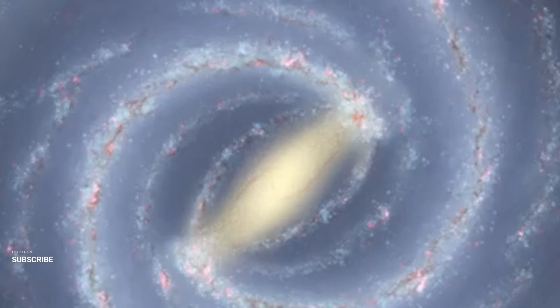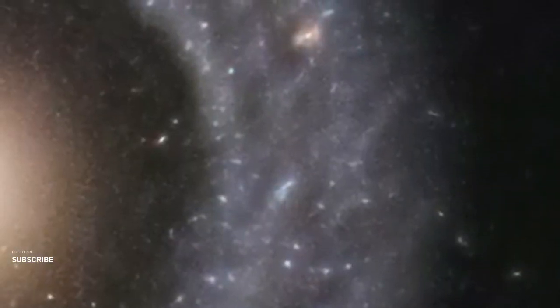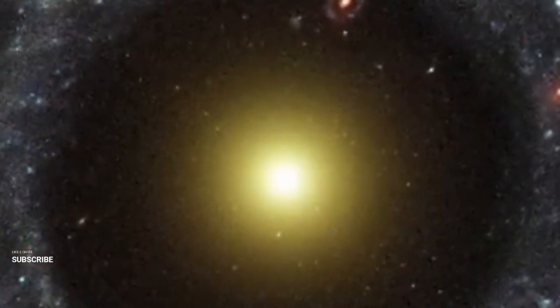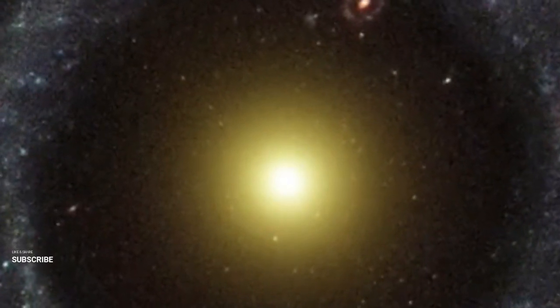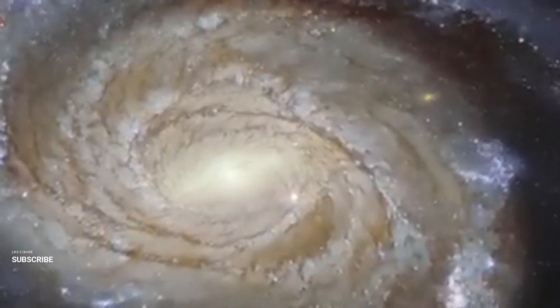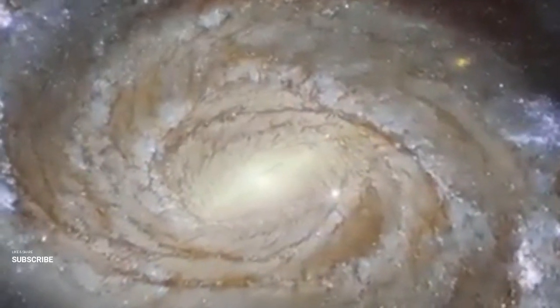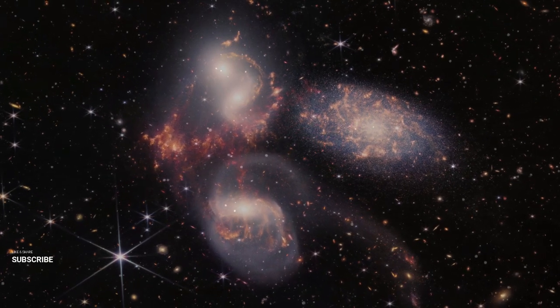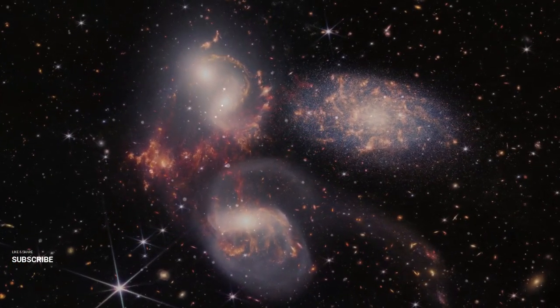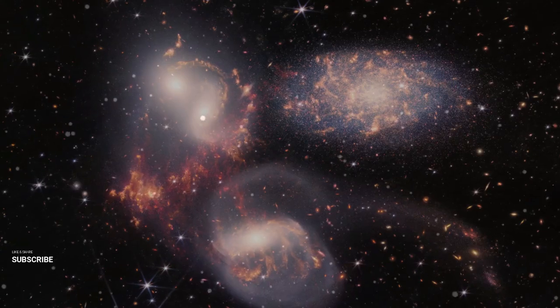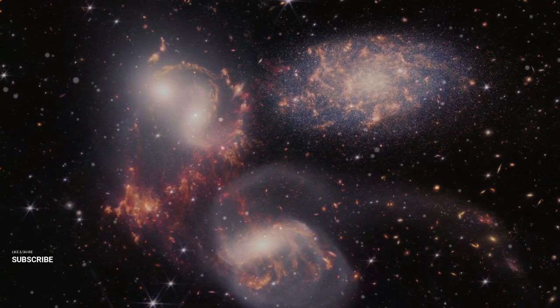Creating a ring galaxy like Hoag's object or the Cartwheel galaxy requires a dramatic event: a cosmic collision. Picture this: a large, gas-rich spiral galaxy, something similar to our Milky Way, meets a smaller galaxy hurtling toward it at high speed. When the smaller galaxy crashes near the center of the spiral, it's like a bullseye, a direct hit that pierces through the larger galaxy like a bullet. Surprisingly, such a collision doesn't destroy the larger galaxy. Instead, it destabilizes it in remarkable ways. The impact creates ripples, much like the waves caused by a pebble dropped into still water. These density waves radiate outward from the galaxy's center, pushing gas and dust toward the edges. As this material compresses, it sparks intense star formation, resulting in the brilliant rings we observe.